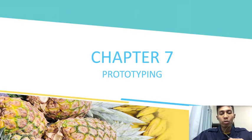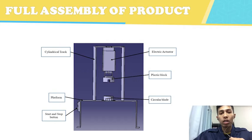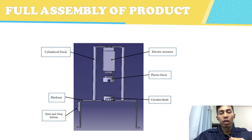Hello and good day everyone. My name is Muhammad Azib Amdan. My part is to present Chapter 7, Prototyping. Based on the slide, this is our full assembly of our product, made using CATIA V5 software. There is an electric actuator that will be used to push the pineapple to be peeled at the circular blade. The platform acts as our frame body, and the start and stop button is used to operate and stop the machine.